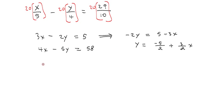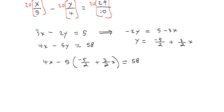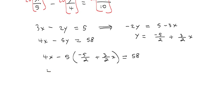So the second equation is 4x minus 5y. Y we said is negative 5 halves plus 3 halves x, that's equal to 58. Let's distribute the negative 5 through the parentheses and we get 4x, negative times negative is a positive, 25 over 2, negative times a positive is a negative 15 over 2x, and that's equal to 58.